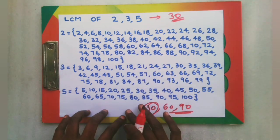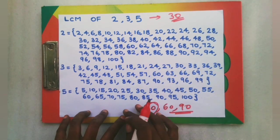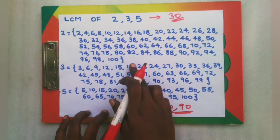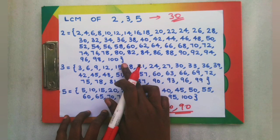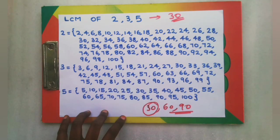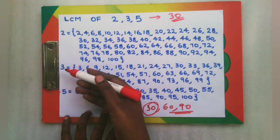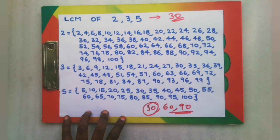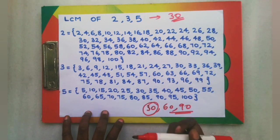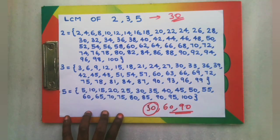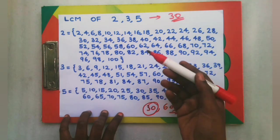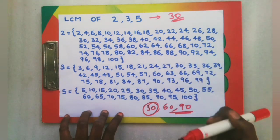To verify: the 2 times table is listed up to 100, the 3 times table is listed up to 100, and the 5 times table up to 100 is complete. In this case, the numbers with all three markings are 30, 60, and 90.